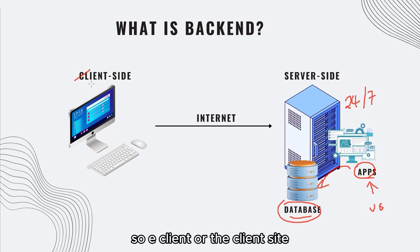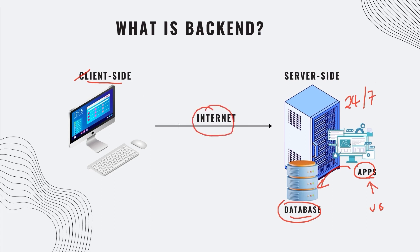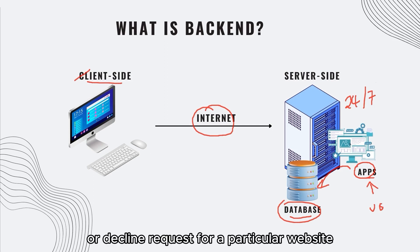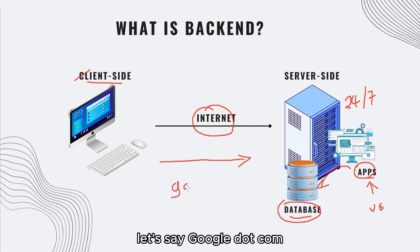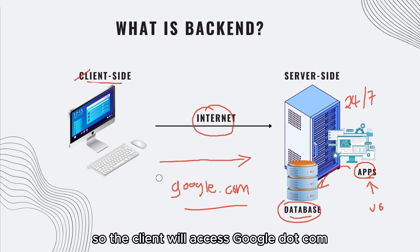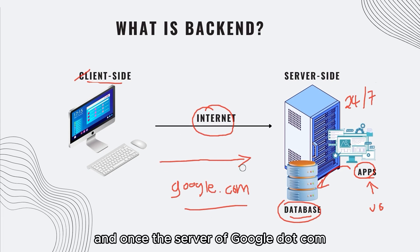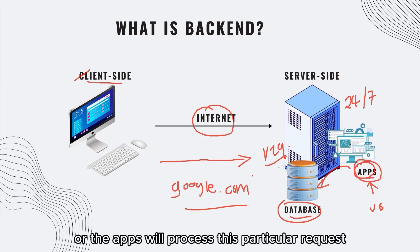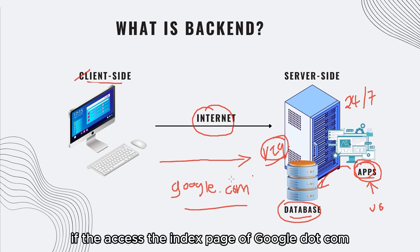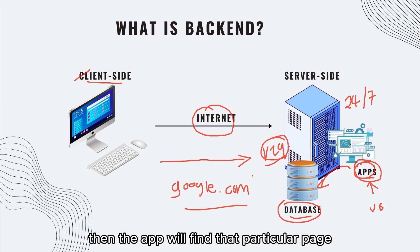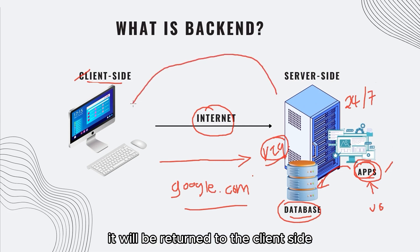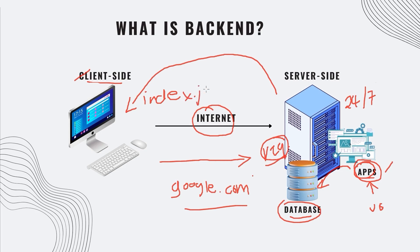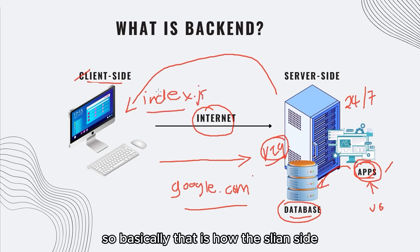A client or the client side can access our server through the internet. For example, the client requests a particular website — say google.com. The client accesses google.com via the internet, and once the server receives this particular request, the application will process it. If they access the index page of google.com, the app will find that particular page and, once found, return it to the client side. Basically, that is how the client side and server side interact with one another — that is how a backend works.